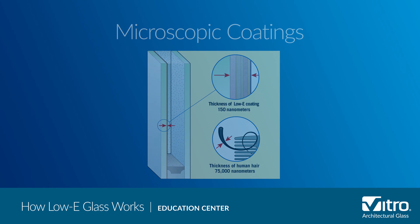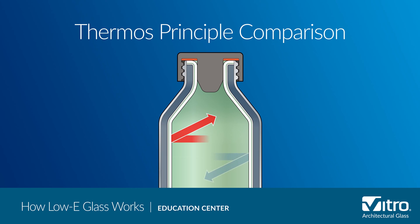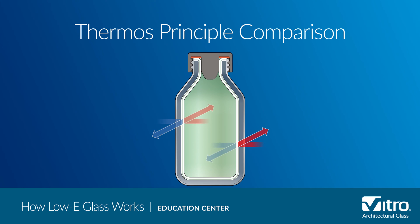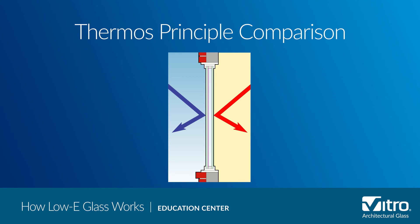Let's talk about how low-e coatings work. When interior heat tries to escape to the cold outside during the winter, the low-e coating reflects the heat back inside, reducing the radiant heat lost through the glass, and the reverse happens during the summer. To use a simple analogy, low-e glass works the same way a thermos does. A thermos has a silver lining that reflects the temperature of its contents back in, maintained by the insulating air space between its inner and outer shells, similar to an insulated glass unit. Since low-e glass is comprised of extremely thin layers of silver or other low-e materials, the silver low-e coating reflects the interior temperature back inside, keeping the room warm or cool.